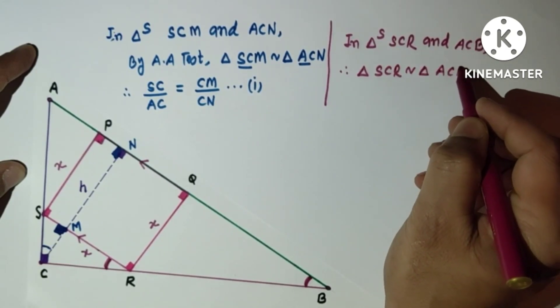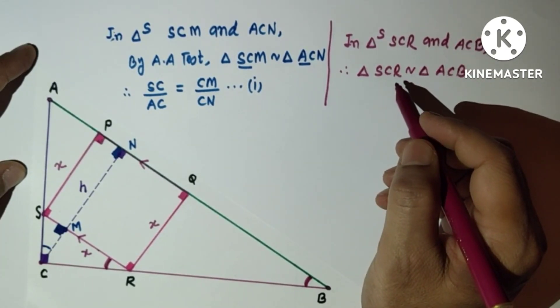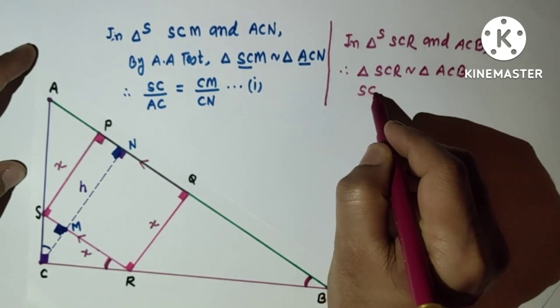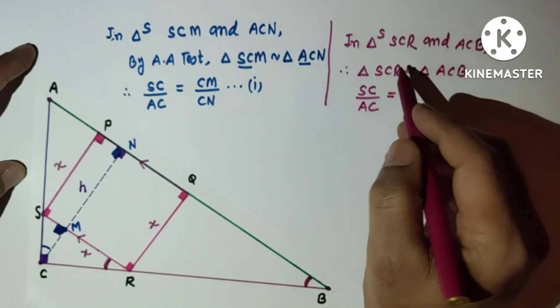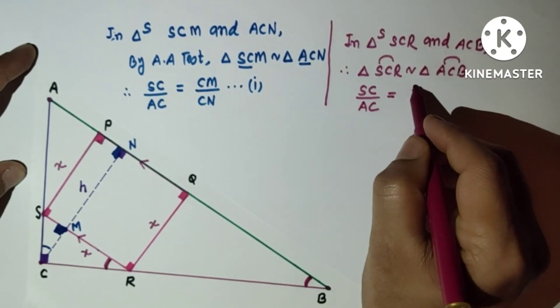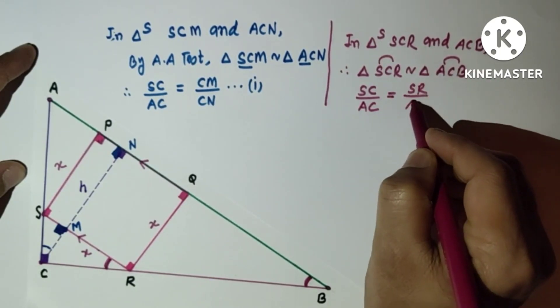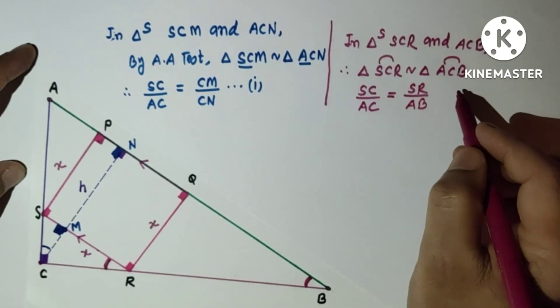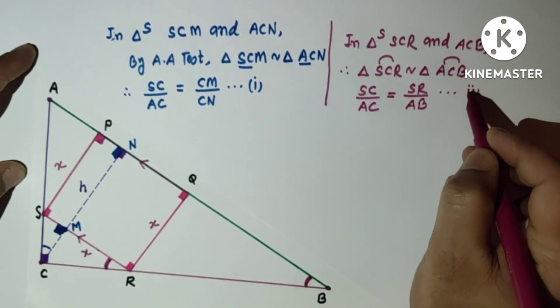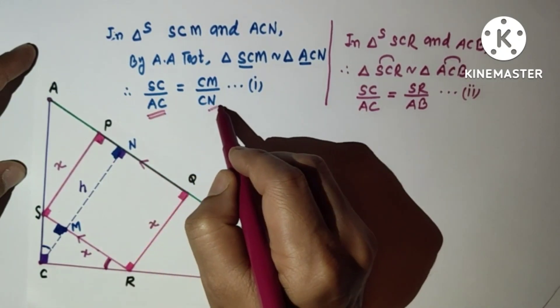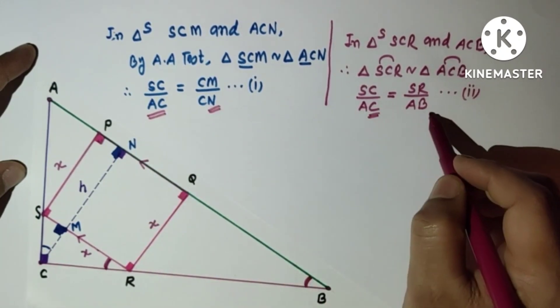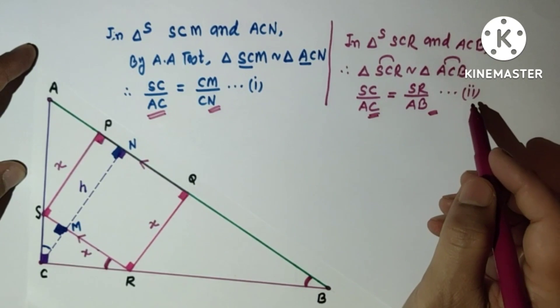Therefore, SC/AC = SR/AB. This is result 2. Since SC/AC equals both CM/CN and SR/AB, from results 1 and 2 we can say that CM/CN = SR/AB.